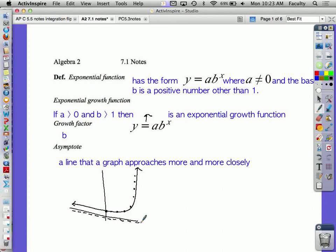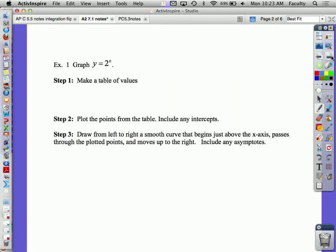It's a boundary for the graph. The graph will never touch it and never go below that horizontal line. So, let's look at example one. We want to graph y equals 2 to the x. We're going to start with an xy table with a standard table of negative 2 to 2. When in doubt, I would use negative 2 to 2.